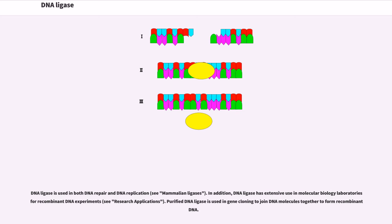Purified DNA ligase is used in gene cloning to join DNA molecules together to form recombinant DNA.